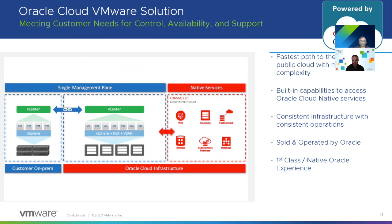VMware on Oracle Cloud runs a full software-defined data center with vSphere, vSAN, and NSX, with adjacency to native Oracle Cloud services — all bare metal. This is sold and operated by Oracle and is not the same purpose-built solution as VMware Cloud on AWS, but provides the same SDDC capabilities and access to Oracle Cloud services.